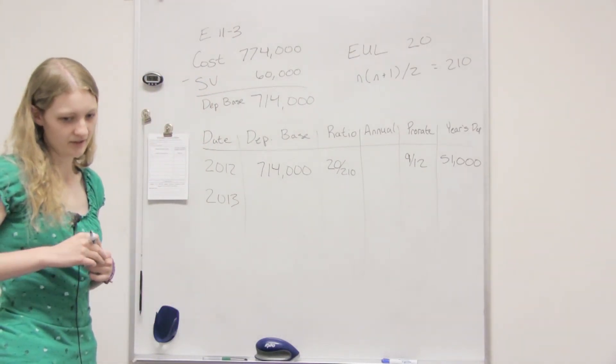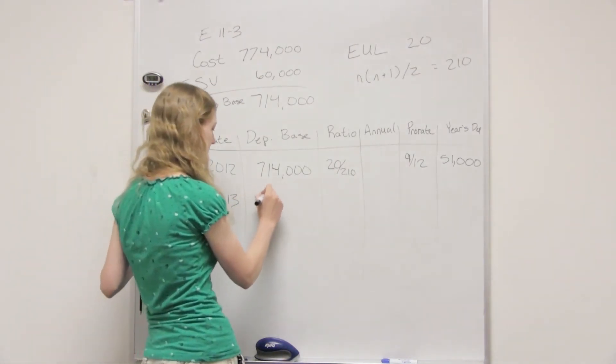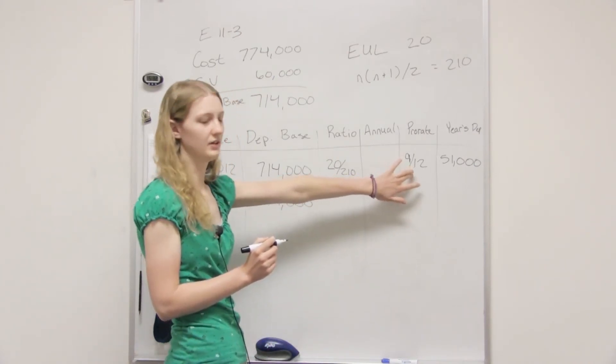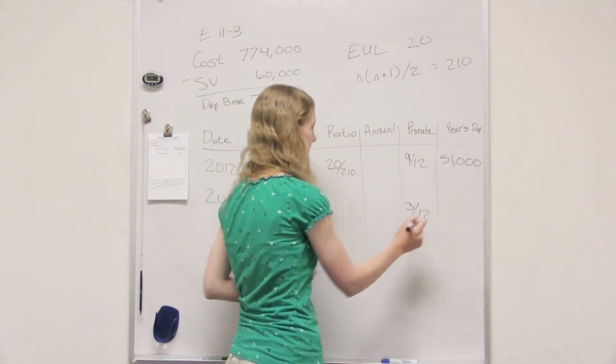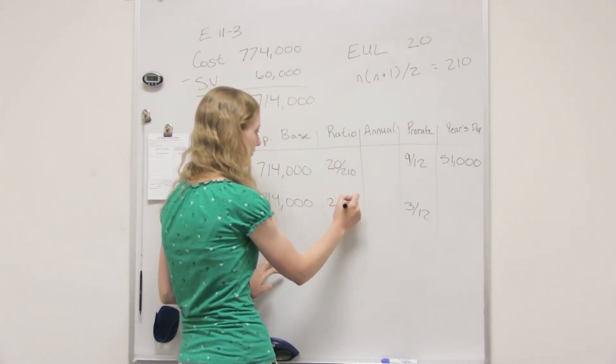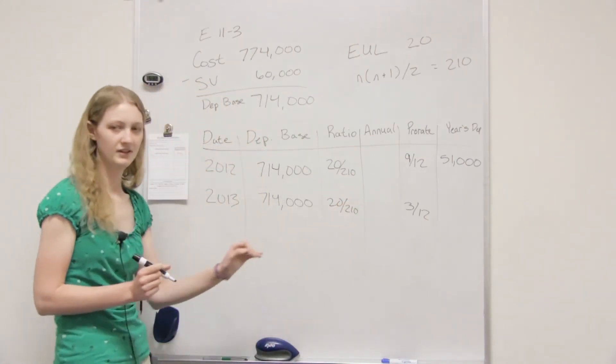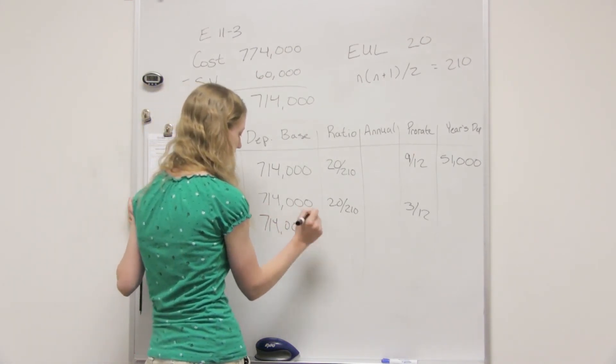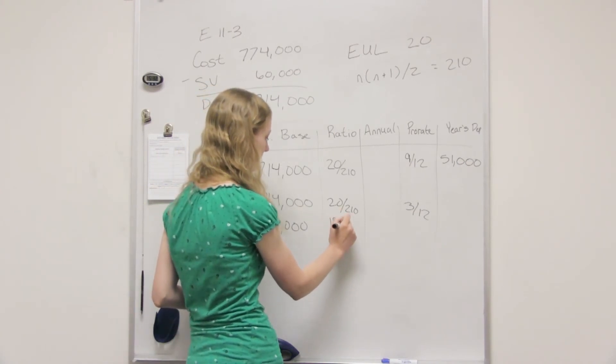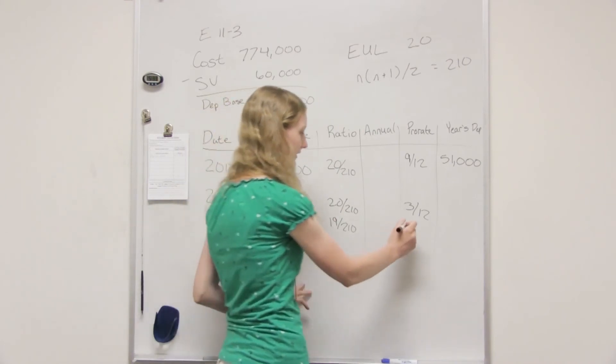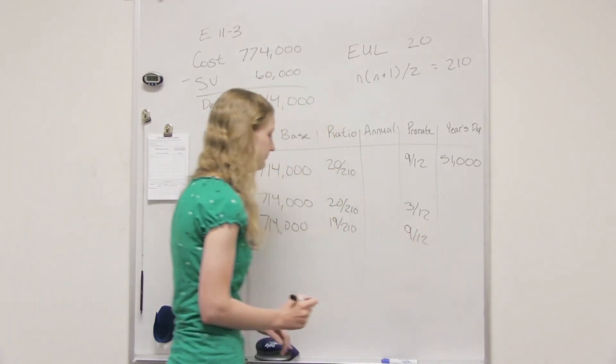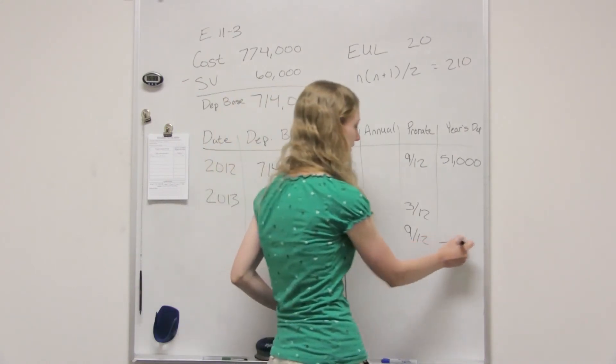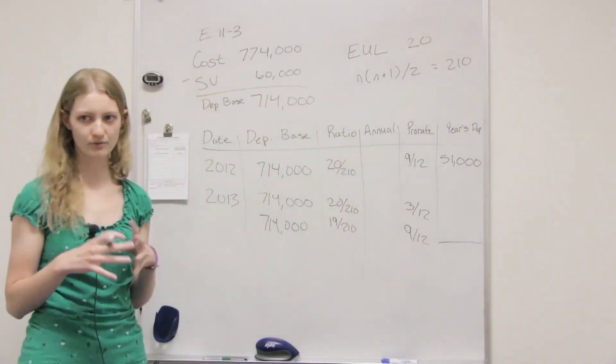And then for our next year, our depreciable base stays the same. And because we only use 9/12s up here, we have to use 3/12s of this ratio down here. So for the first part, this 20 divided by 210 is going to be the same. And then we're going to do a second part of the ratio and make this 19 over 210. And then this will be prorated for 9/12s. And so to get your total year's depreciation, you would just multiply both of those and then add it together there to get your total year's depreciation.